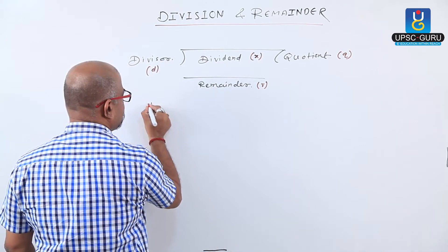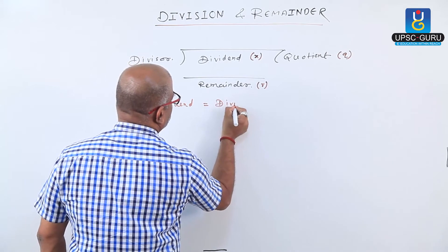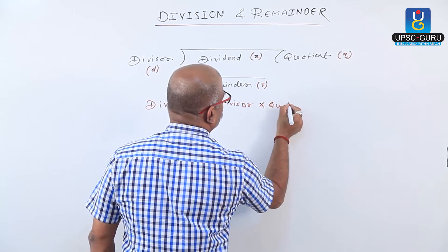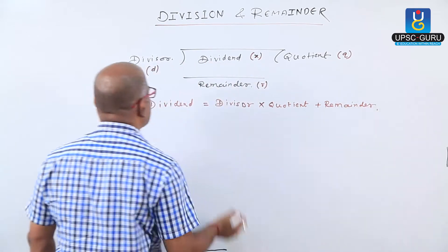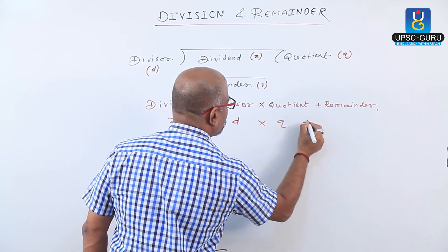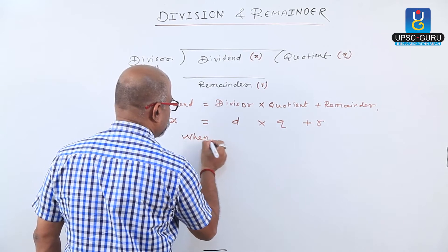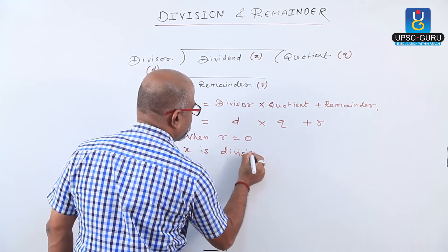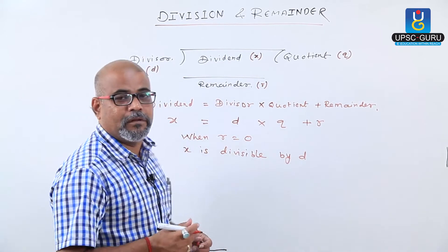We get one relation: dividend equals divisor into quotient plus remainder. That is, X equals D into Q plus R. Here, when the remainder is 0, we say that X is divisible by D — your dividend is divisible by the divisor.